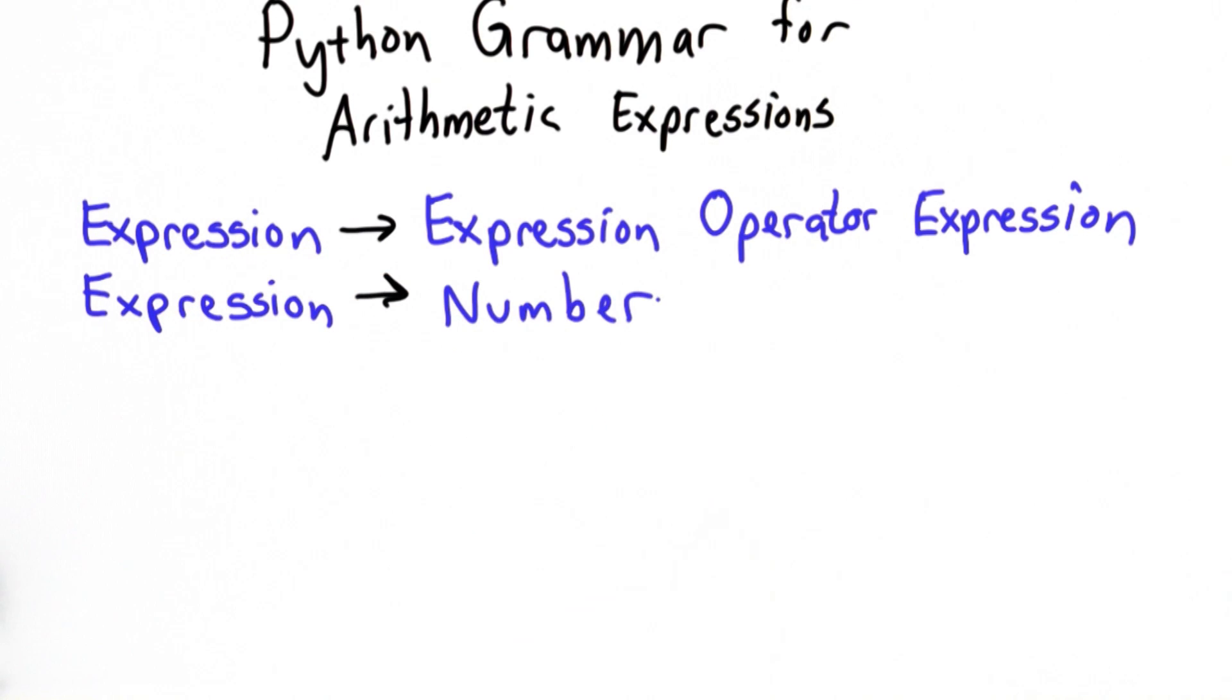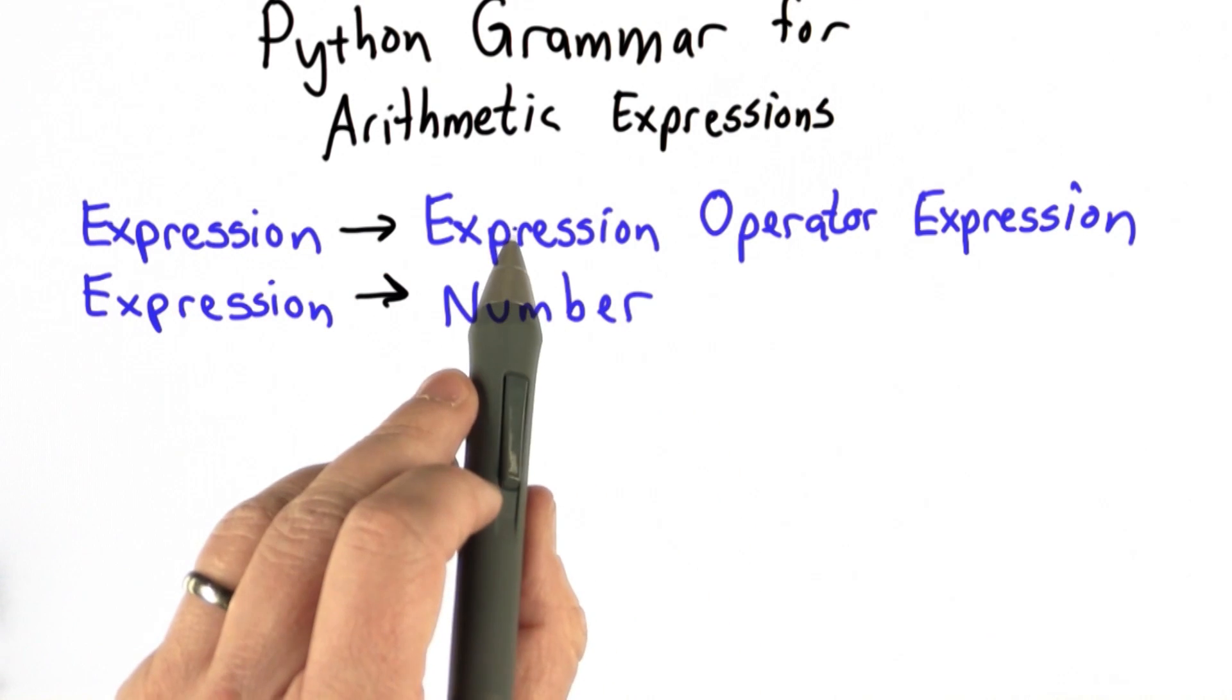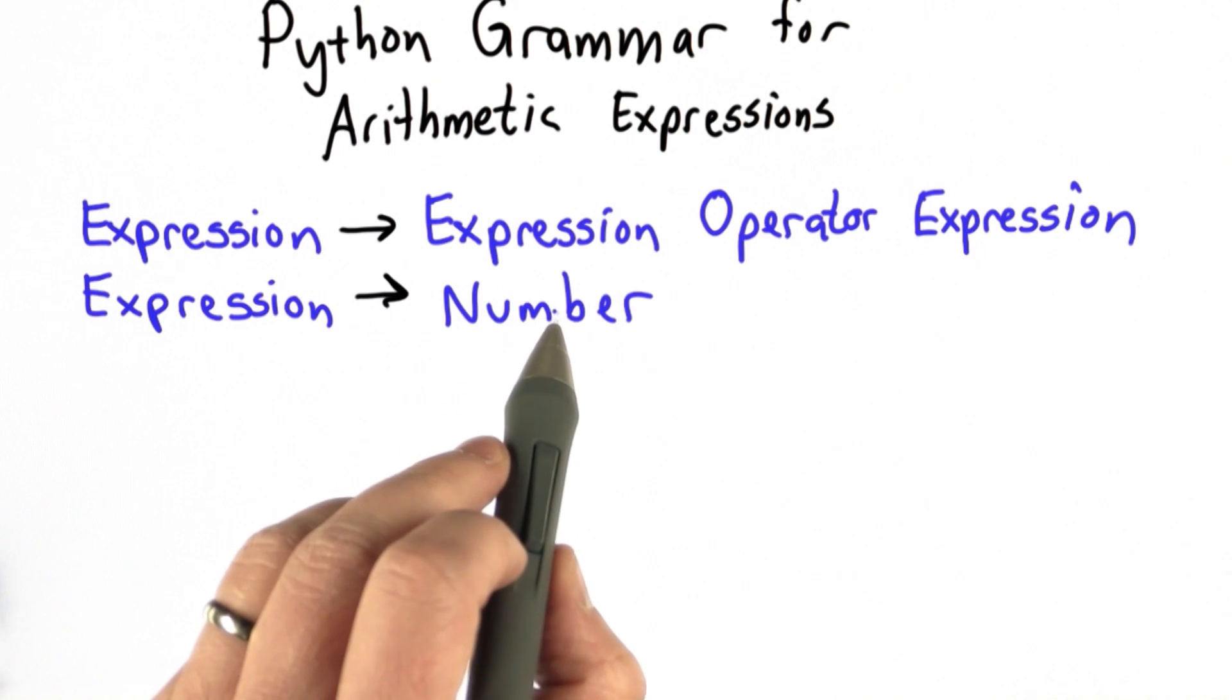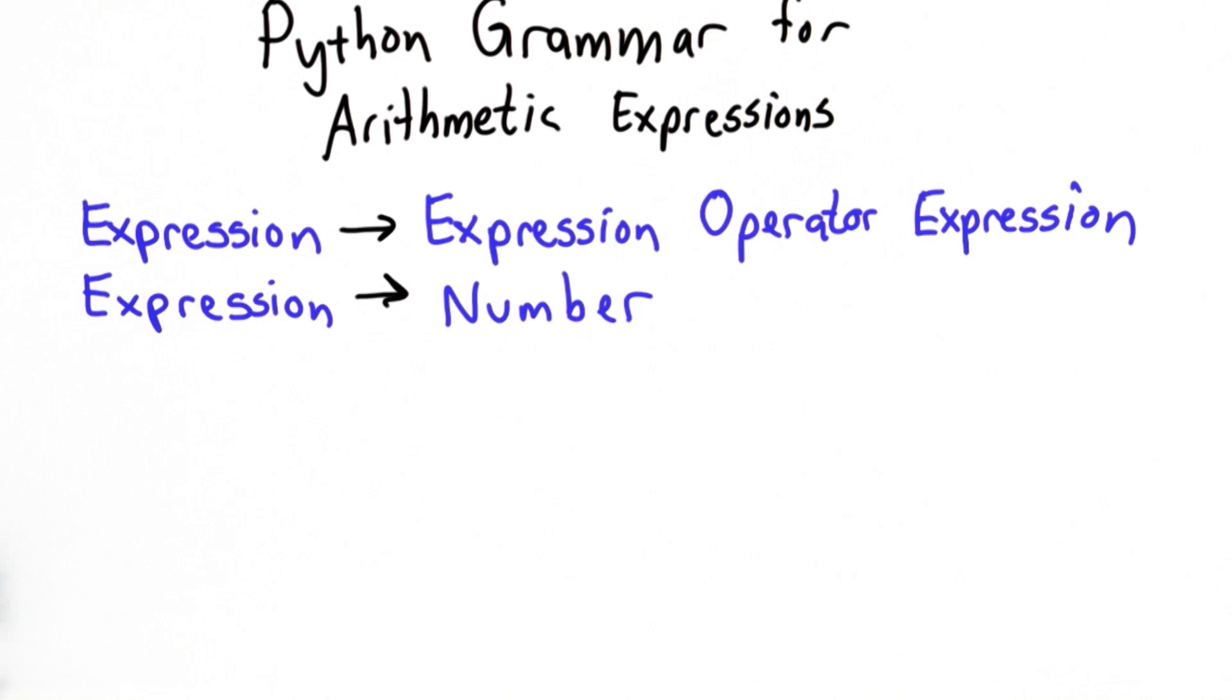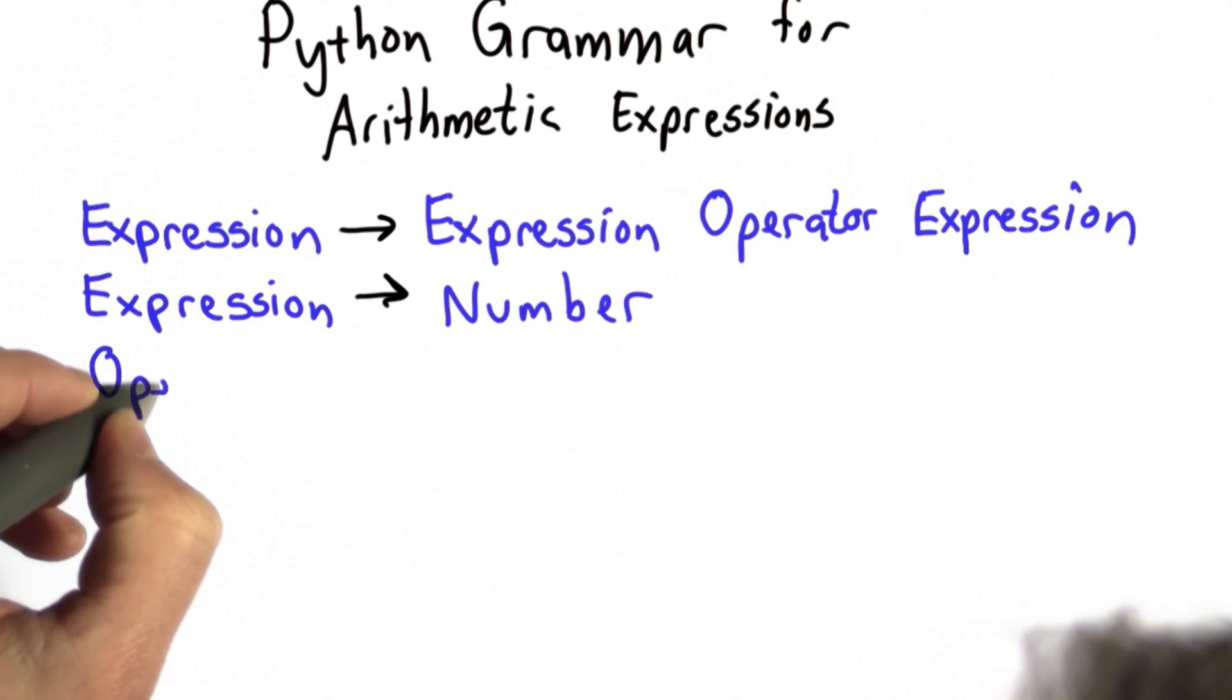Another thing that an expression can be is a number. This is why we can make expressions like 1 plus 1. This expression will become a number which will become 1, the operator will become plus, and the other expression will become 1.